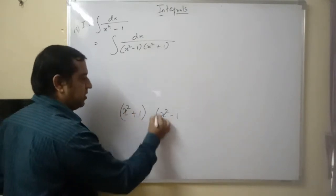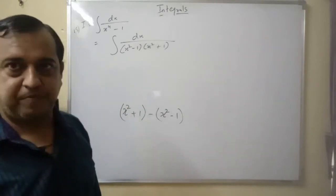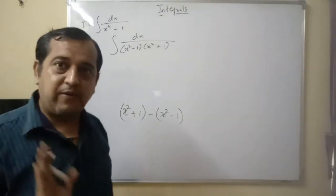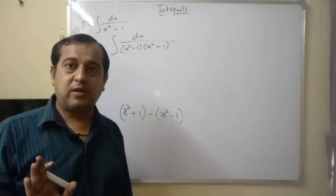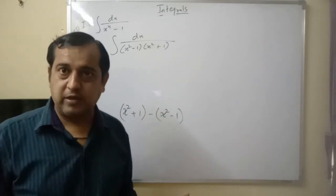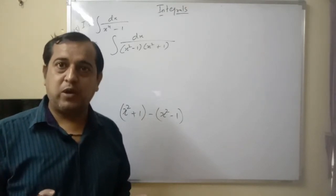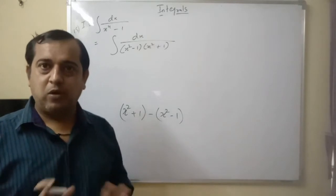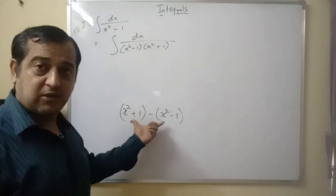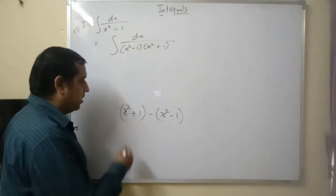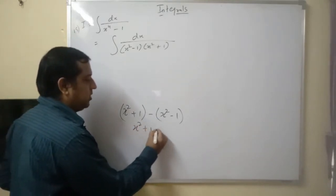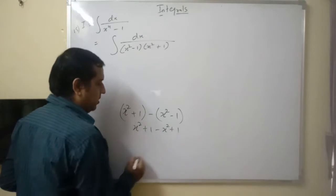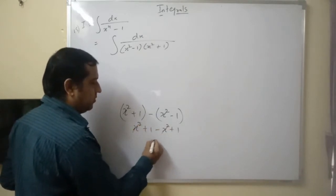In these two, you do subtraction. Subtraction I'm doing because we don't want the variable term. We can multiply and divide by a constant, we cannot do it with a variable. Variable term if needed will be inside the integral, not outside. So avoid the variable. Do subtraction. When we do subtraction of these, what will we get? x square plus 1 minus x square plus 1, and that gives you x square, x square cancel, you get 2.